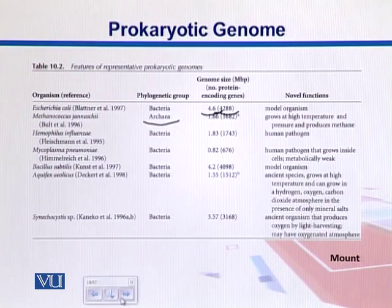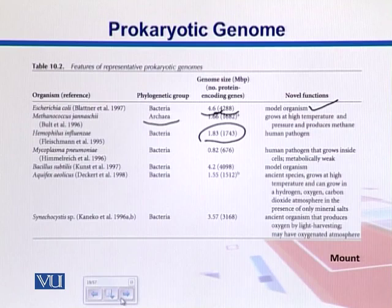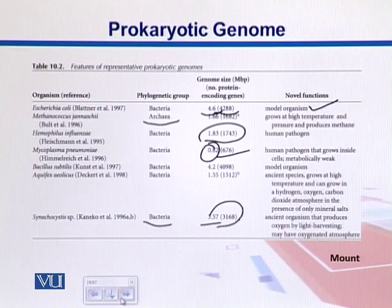The Archaea Methanococcus has a genome of 1.66 MB and 1,682 genes; it grows at high temperatures and produces methane, which may be useful for natural gas. Haemophilus influenzae is 1.83 MB with 1,743 genes and is a human pathogen. Mycoplasma, a pneumonia pathogen, is 0.82 MB with 676 genes. Finally, Synechocystis is a bacterium with 3.57 MB and 3,168 genes.